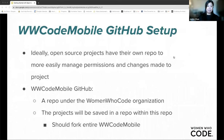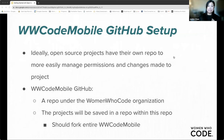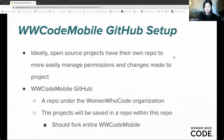Now that we've discussed how to maintain open source projects in general, we're going to dive into how we propose to set up and maintain the open source coding projects for the Women Who Code Mobile track. This is a proposal and we're open to discussion. Ideally, open source projects have their own repo to more easily manage permissions, but our Women Who Code GitHub page is actually a repo under the Women Who Code organization, meaning the projects will be saved in a repo within a repo. This means we can't give permission access to members only by project — we have to give access to the entire mobile GitHub repo.